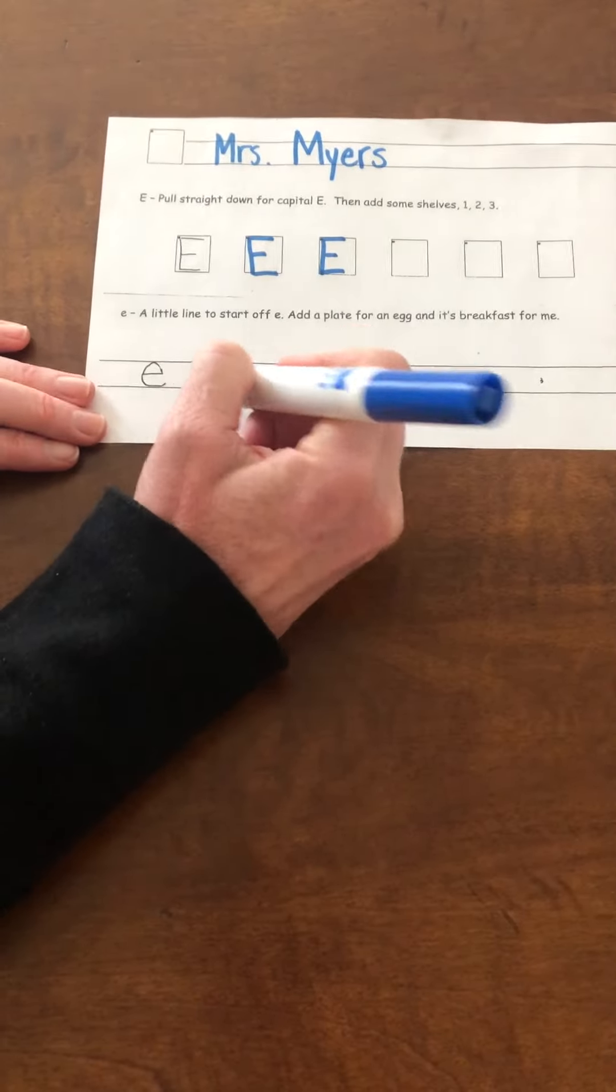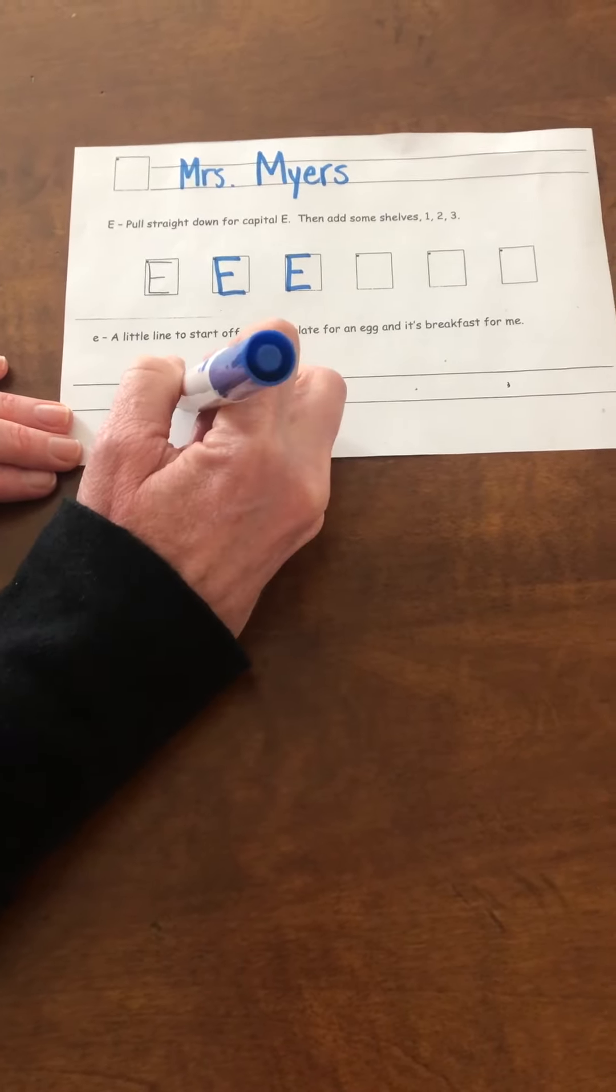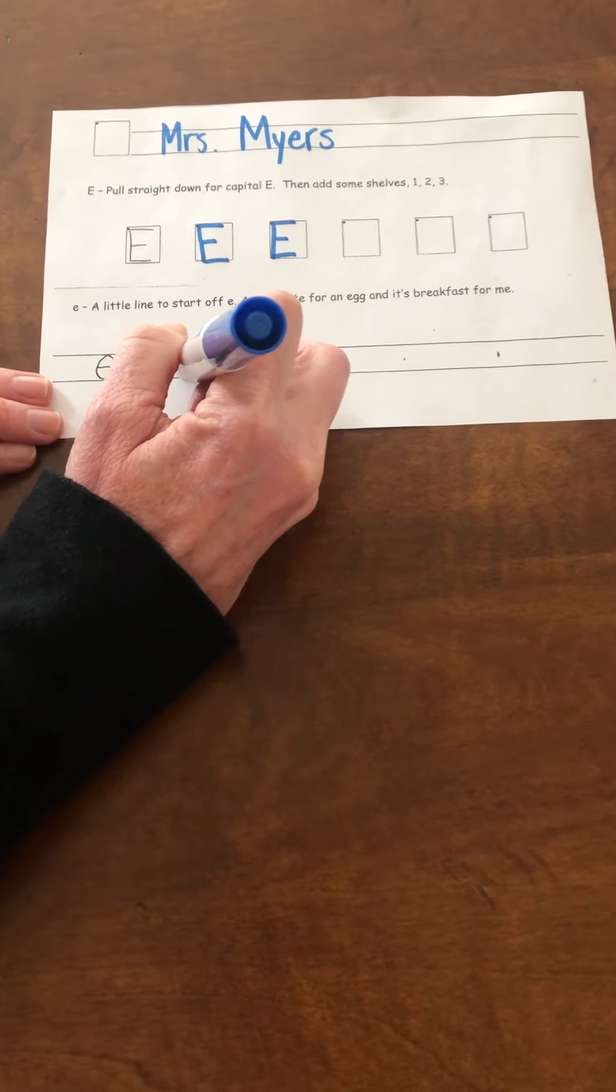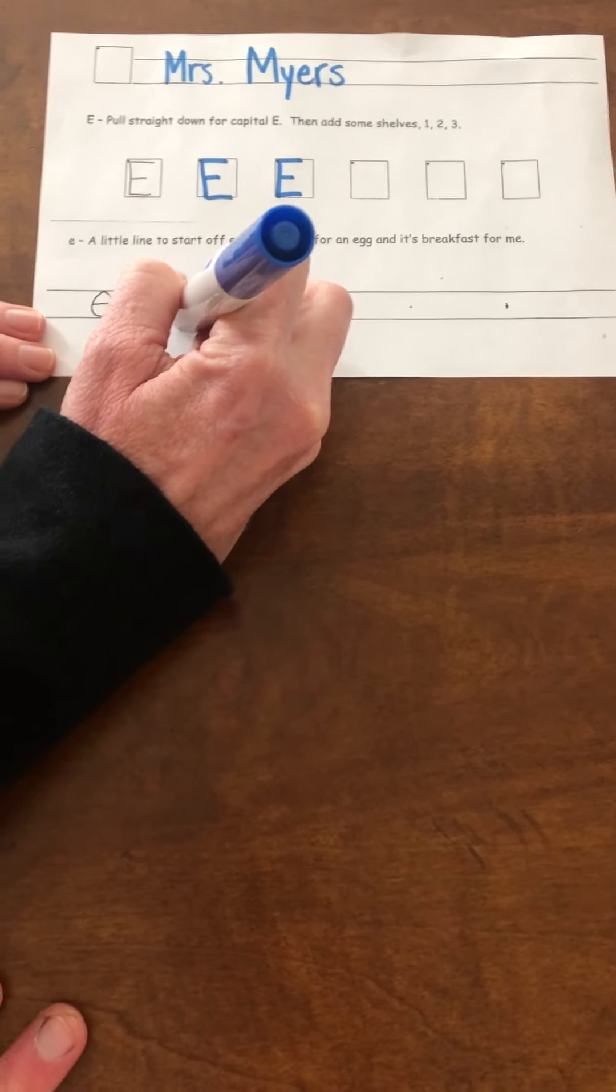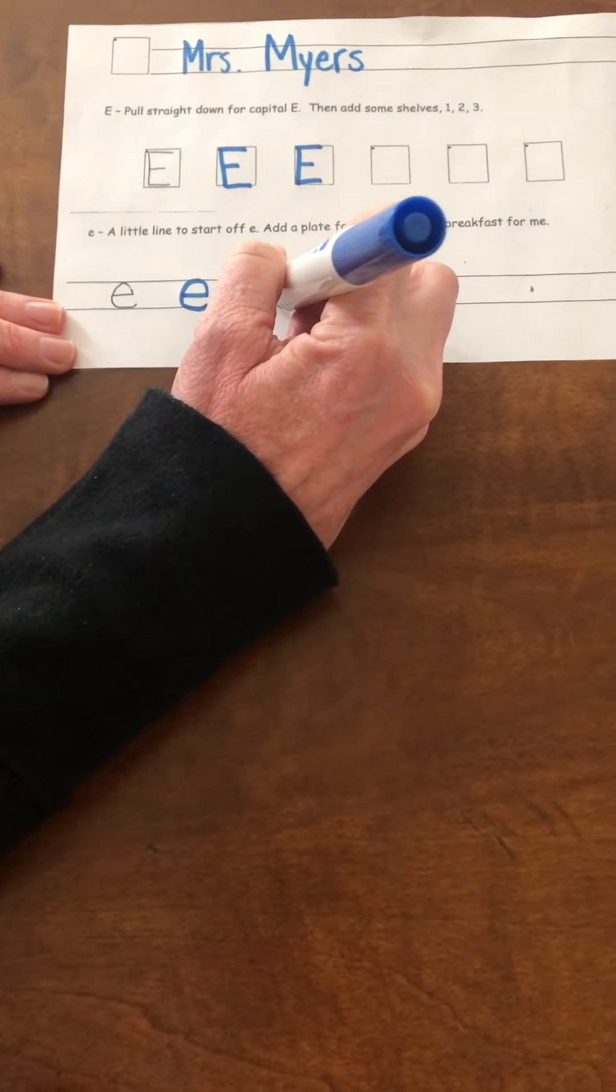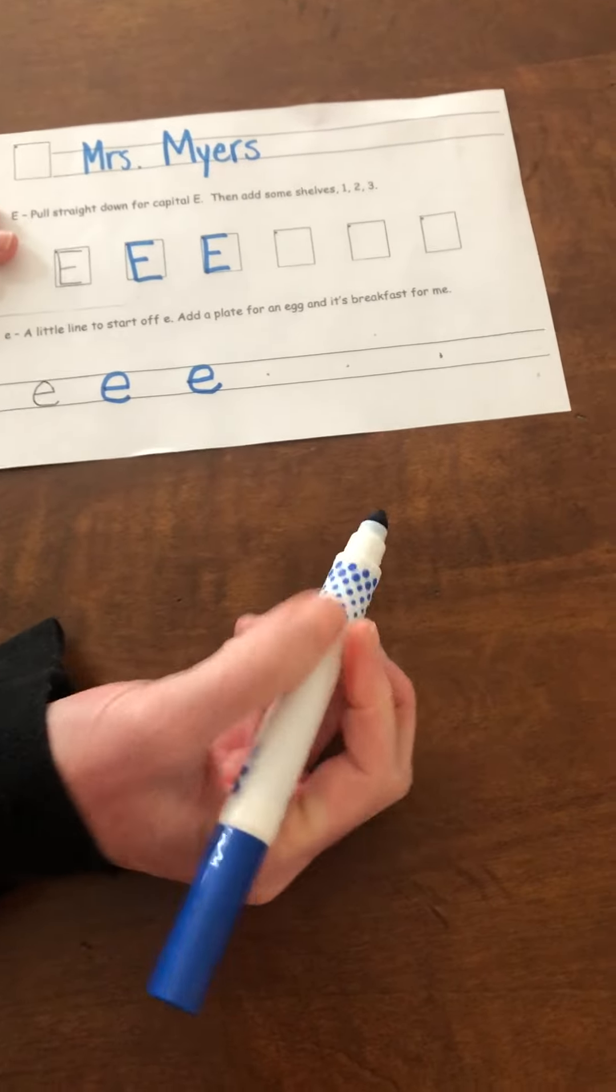Then you need to go to the bottom and practice your lowercase E's. So put your marker on the dot and go out, up, and around the town. Put your marker on the dot. Out, up, and around the town. When you're done, you can pick your favorite one and circle it, and you can have your mom or dad pick their favorite one and circle it too.